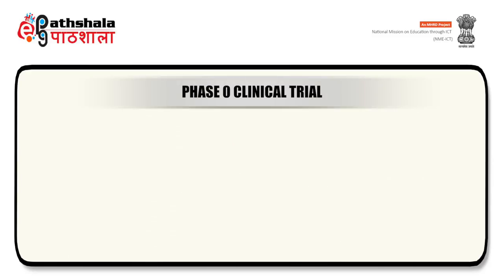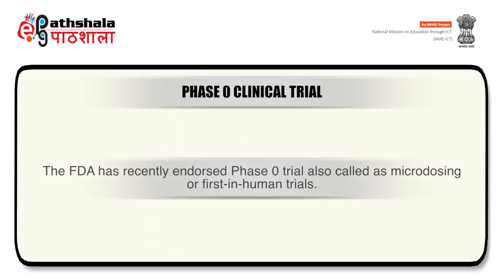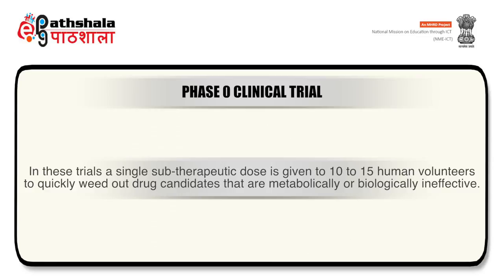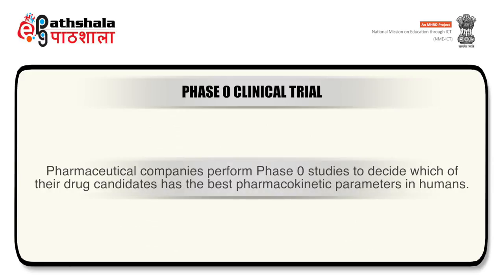To begin with, it is Phase 0 Clinical Trial. The FDA has recently endorsed Phase 0 trials, also called Microdosing, as first-in-human trials. In these trials, a single sub-therapeutic dose is given to 10 to 15 human volunteers to quickly weed out drug candidates that are metabolically or biologically ineffective. Pharmaceutical companies perform Phase 0 studies to decide which of their drug candidates has the best pharmacokinetic parameters in humans.